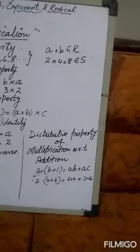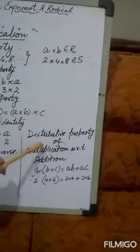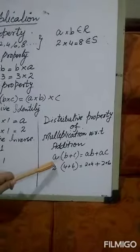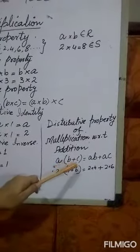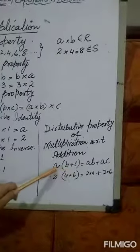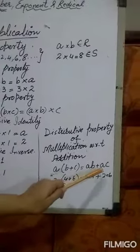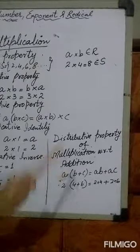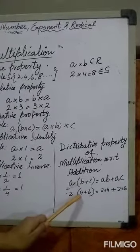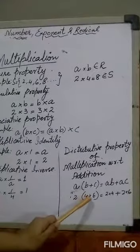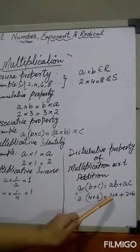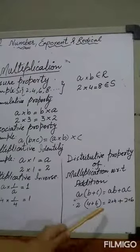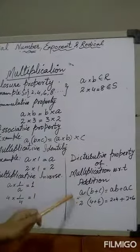The last property combines addition and multiplication: the distributive property of multiplication with respect to addition. For real numbers A, B, C: A times (B plus C) equals A times B plus A times C. For example, with the set {2, 4, 6}: 2 times (4 plus 6) equals 2 times 4 plus 2 times 6. These properties will be useful for solving exercises.